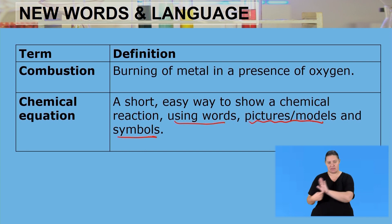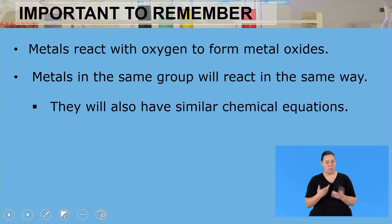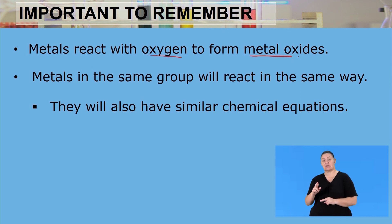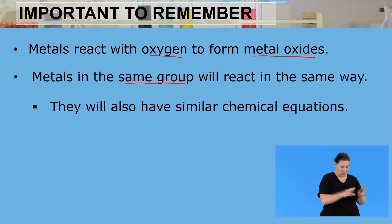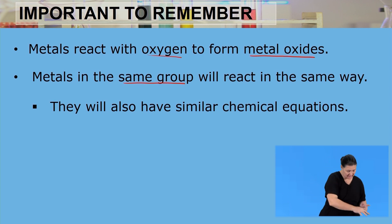We can also use chemical symbols, which are found from the periodic table of elements. The most important things to remember are: number one, metals reacting with oxygen will always form a metal oxide, and number two, metals in the same group will react in the same way — metals in group one will react the same way with oxygen, and metals in group two will react the same way with oxygen.